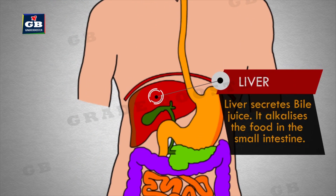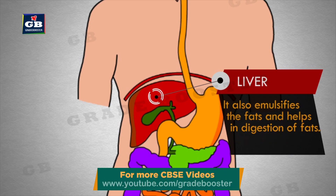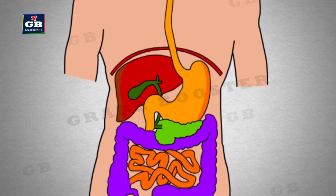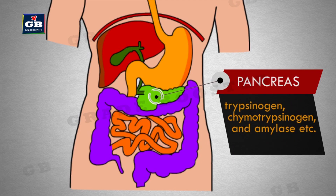Liver secretes bile juice. It alkalizes the food in the small intestine, emulsifies the fats, and helps in digestion of fats. Pancreas secretes pancreatic juice. It has different enzymes like trypsinogen, chymotrypsinogen, and amylase. These enzymes help in the complete digestion.